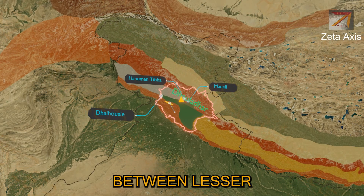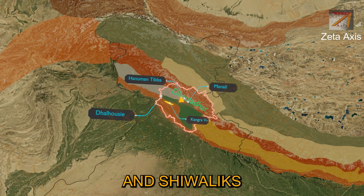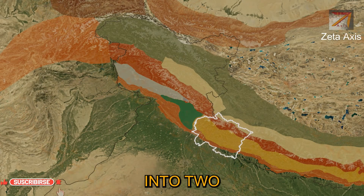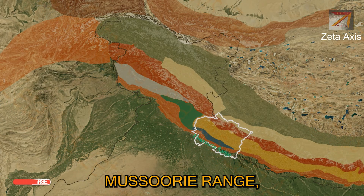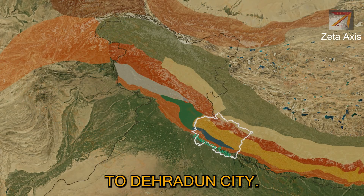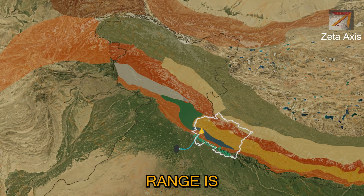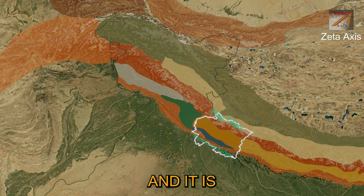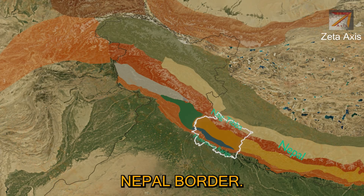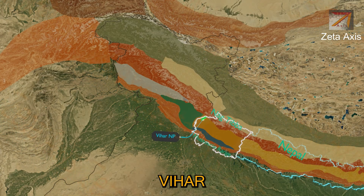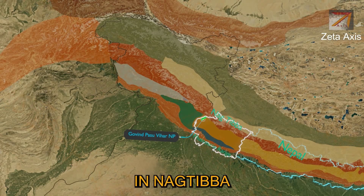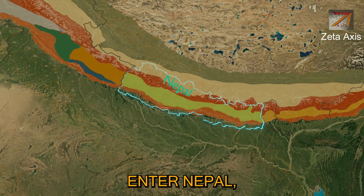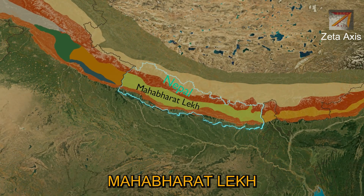The Kangra valley lies between the Lesser Himalayas and Siwaliks in Himachal Pradesh. In Uttarakhand, the Lesser Himalayas split into two branches: the first is the Mussoorie range, located very close to Dehradun city, with the highest peak being Mussoorie. The next part is Nag Tibba, which is parallel to the Mussoorie range and extends till the Nepal border. The Govind Pashu Vihar National Park is located in the Nag Tibba range. After Nag Tibba, the Lesser Himalayas enter Nepal, where they are called the Mahabharat Range.